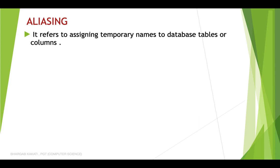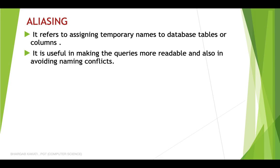What do we mean by aliasing? Aliasing refers to assigning temporary names to database tables or columns. If I want to put an alternative name into a database table or column, this concept is referred to as aliasing. It is useful in making queries more readable and also in avoiding naming conflicts, which we shall see when we join more than one table.